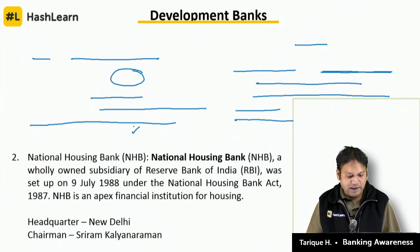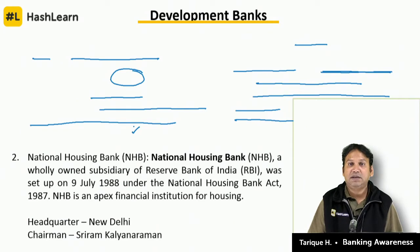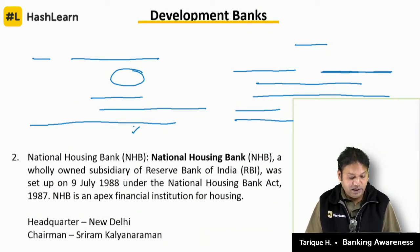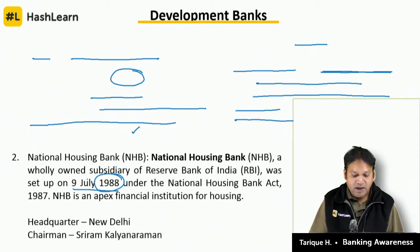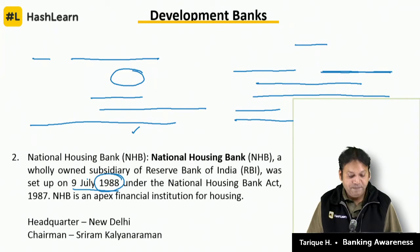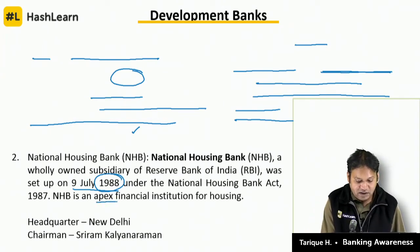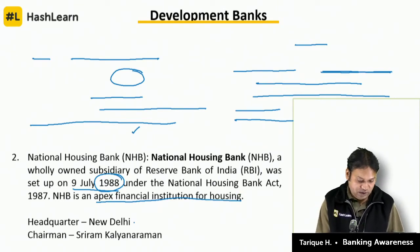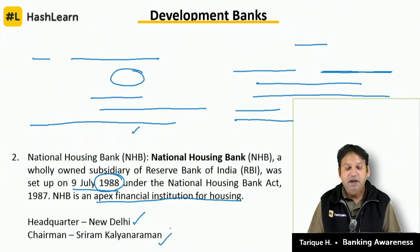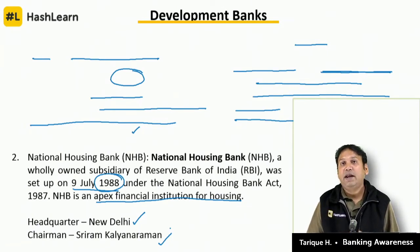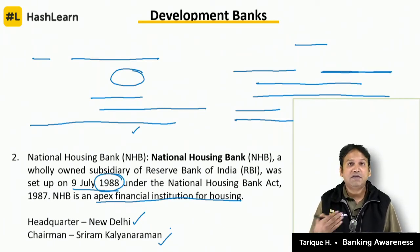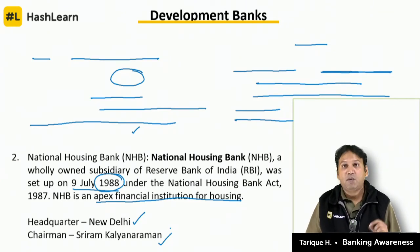The next development bank is the National Housing Bank, which is a fully-owned subsidiary of the Reserve Bank of India. It was set up on 9th July 1988, based on the National Housing Bank Act of 1987. It is the apex financial institution for housing in our country. The headquarter is in New Delhi and the chairman is Shri Ram Kalyanaraman. Key exam questions: when did the bank start, what is its full form, where is the headquarter, and who is the chairman.